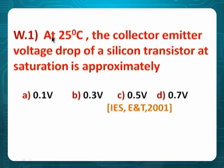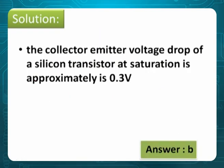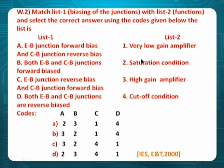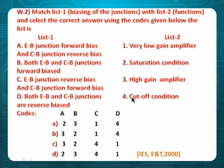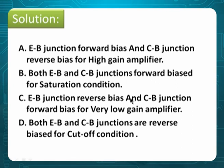Worked-out examples. Problem 1: At 25 degrees Celsius, the collector-emitter voltage drop of a silicon transistor at saturation is approximately what? The answer is approximately 0.3 (since VCE(sat) is typically 0.2, roughly 0.3). Option B. Problem 2: Biasing of junctions — emitter-base forward and collector-base reverse gives high-gain amplifier (active). Both forward gives saturation. Reverse and forward gives low-gain amplifier (attenuator). Both reverse gives cutoff. Matching option is B.